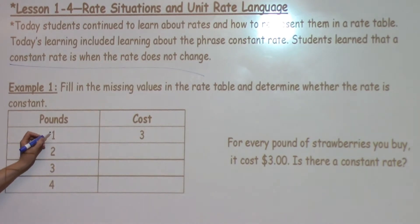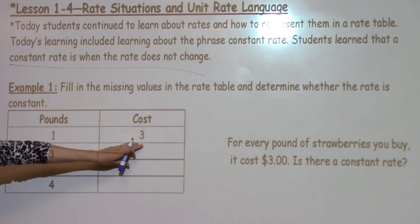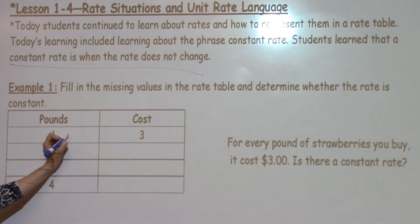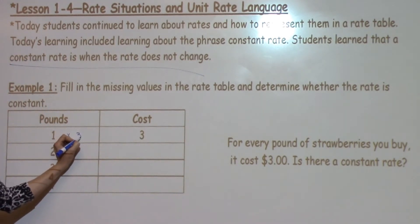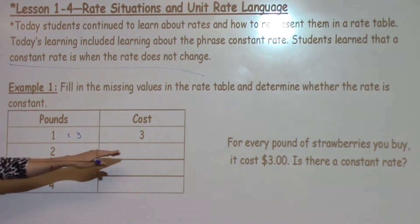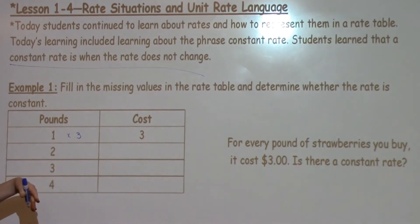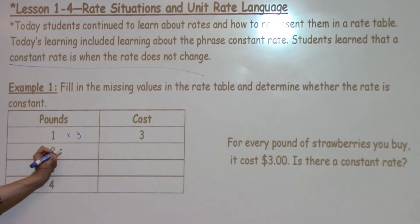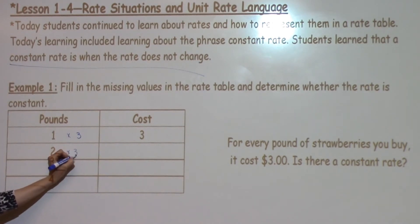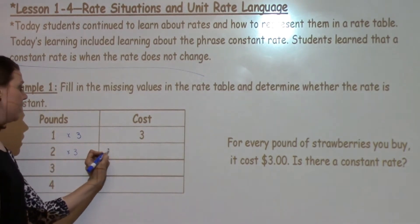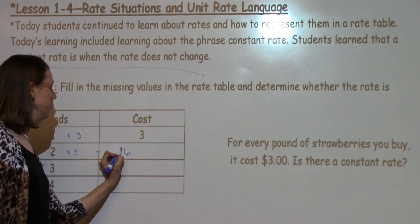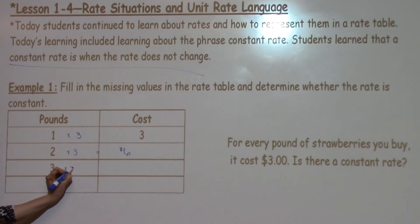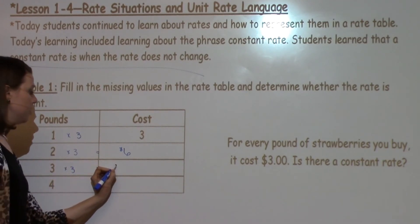Looking at what the table already gives us, we have one pound and the rate is $3. So we know that this is a constant rate, because 1 times 3 equals 3. Now to fill in the missing values, I need to use the cost of $3 as my constant rate. So 2 times 3, which is my constant rate, gives me 6. Using 3 as my constant rate, I have 3 times 3, which gives me $9.